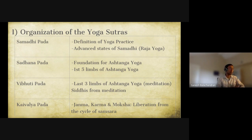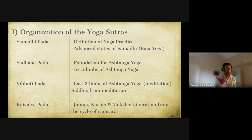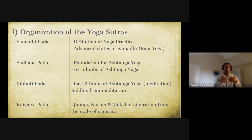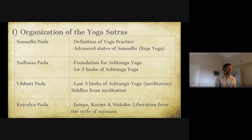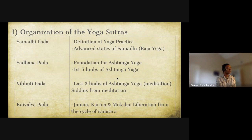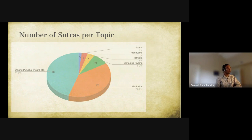The last chapter is the Kaivalya Pada. Kaivalya means aloneness or separateness — it means being able to separate your purusha from the prakriti. Purusha is the atma which is inside; prakriti is the body and all material objects. This chapter is also called the chapter on janma, karma, and moksha — liberation from the cycle of samsara. This is the organization of the Yoga Sutras.